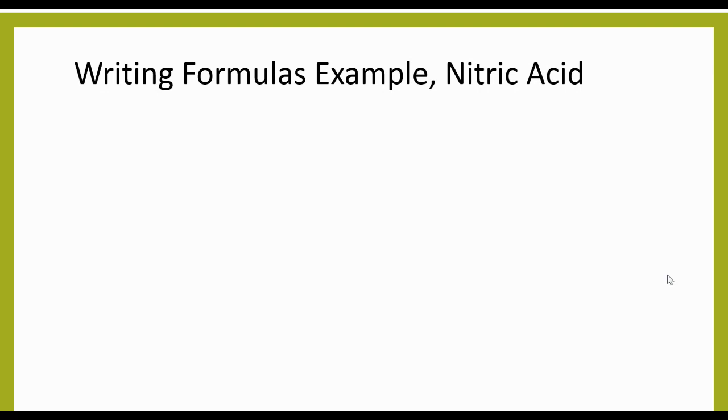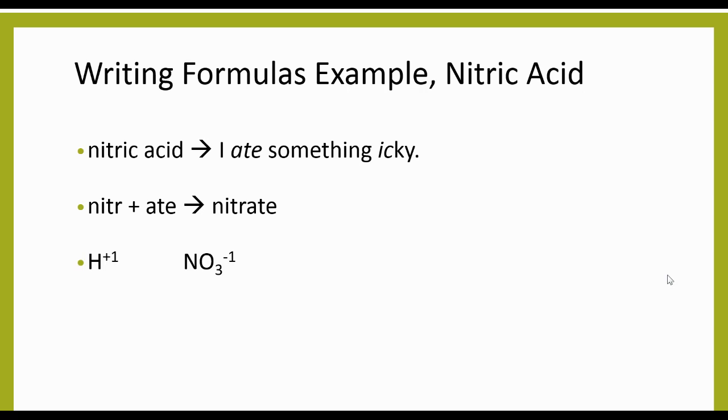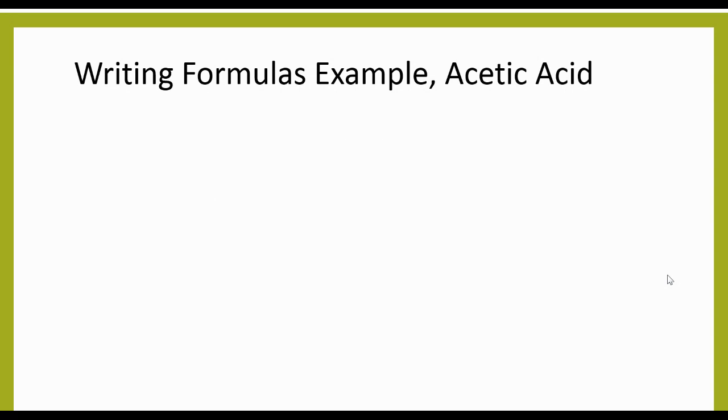Let's do some examples here. We have nitric acid. Well, if we think about this, -ic acid, 'I ate something icky,' right? So nitric acid, 'I ate something icky,' so we're going to take the stem from that, so the nitr with the r, so we have the nitr plus -ate, so nitrate. Now if we go ahead and write out those two ions, we're going to have hydrogen with our nitrate, and then we're going to crisscross. We have a plus one and a negative one, in this case we don't add any extra subscripts, so we get our formula for nitric acid being HNO3.